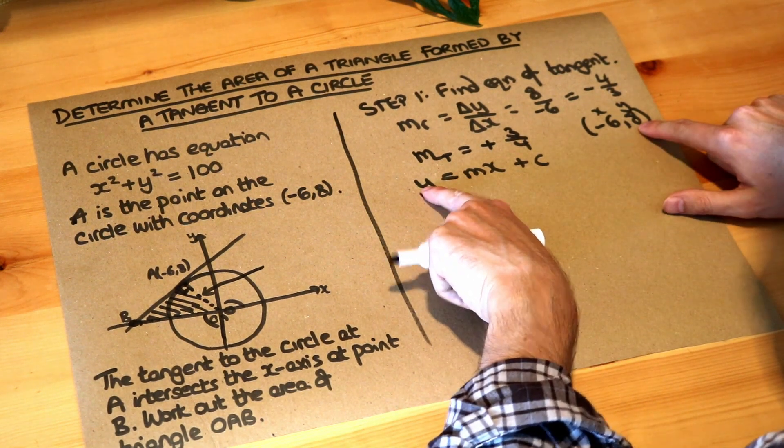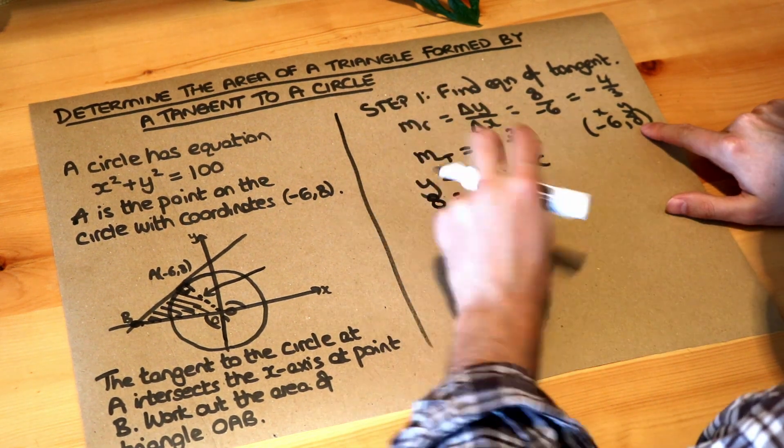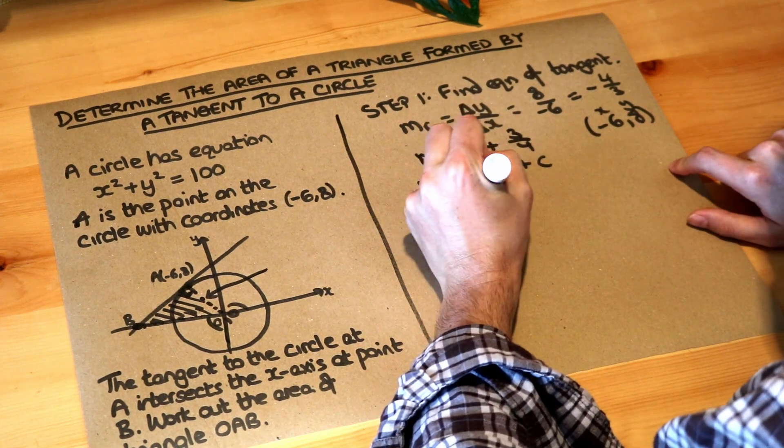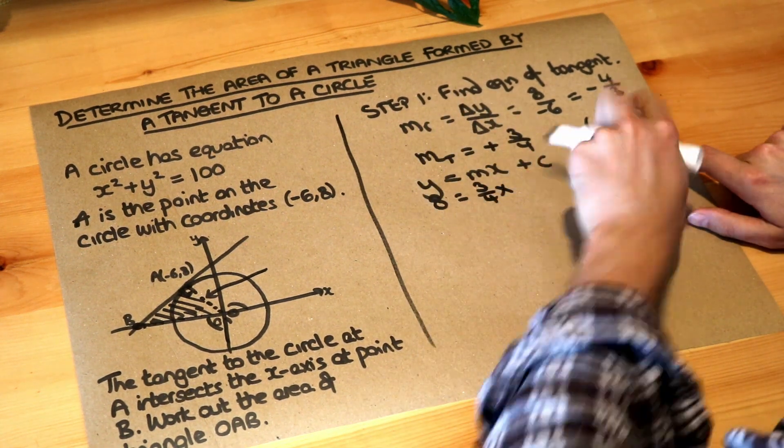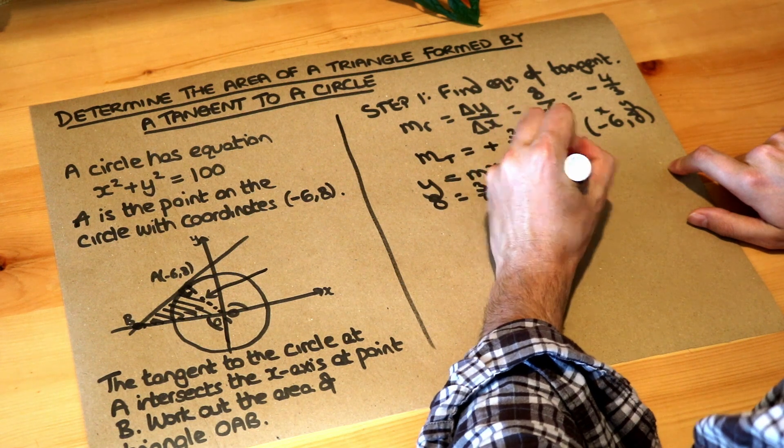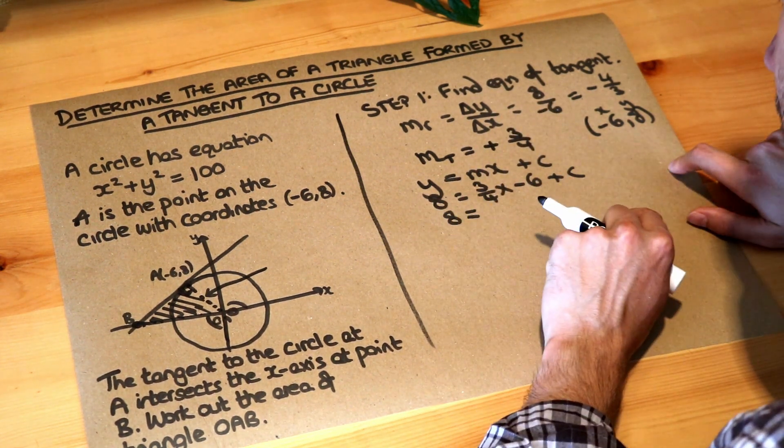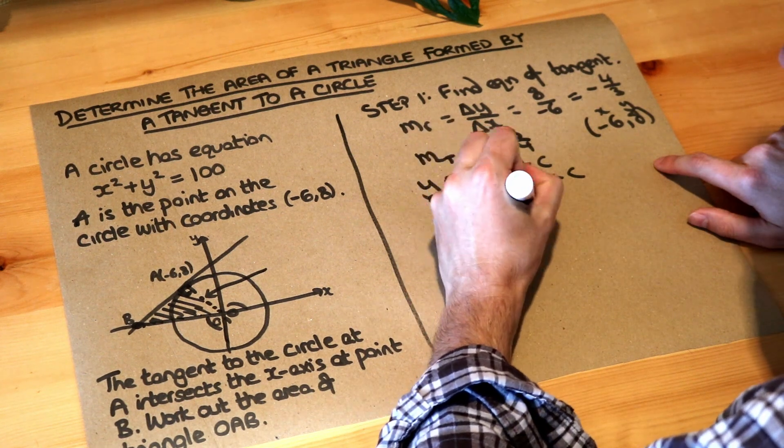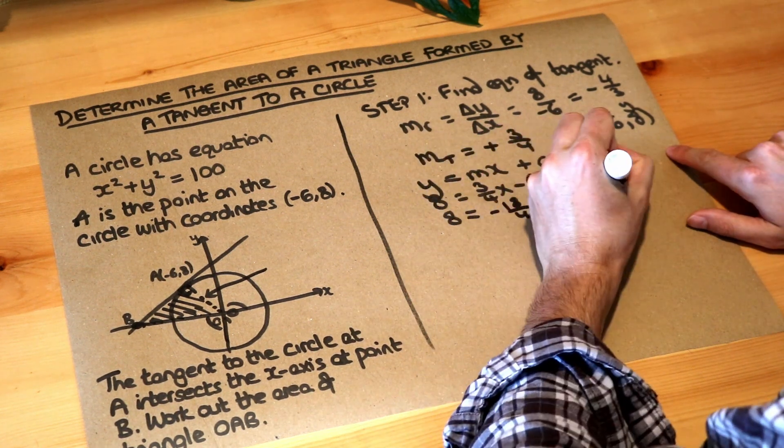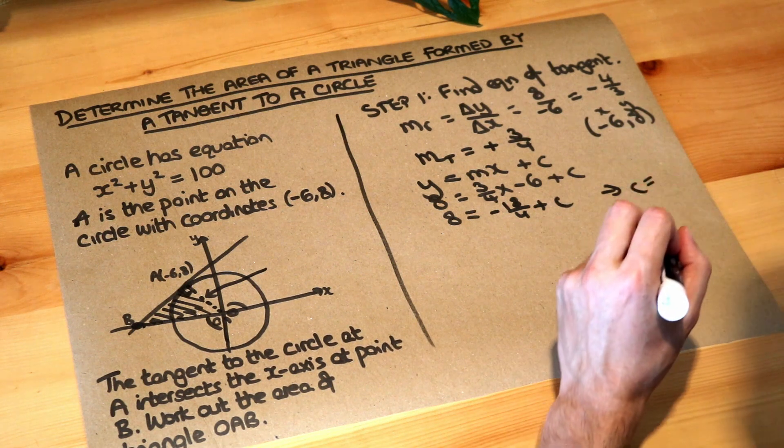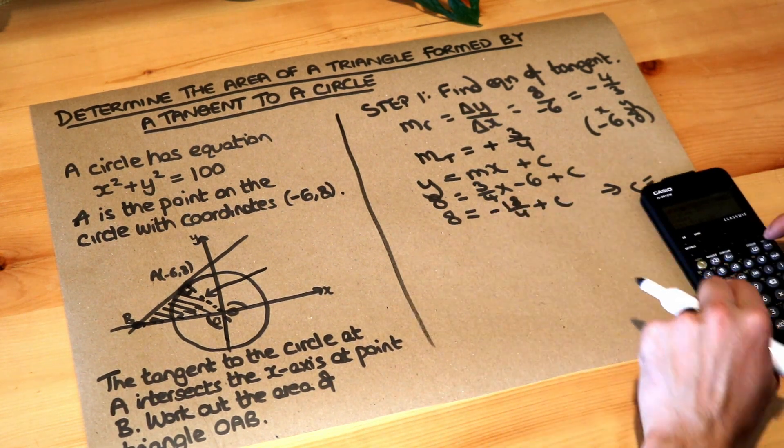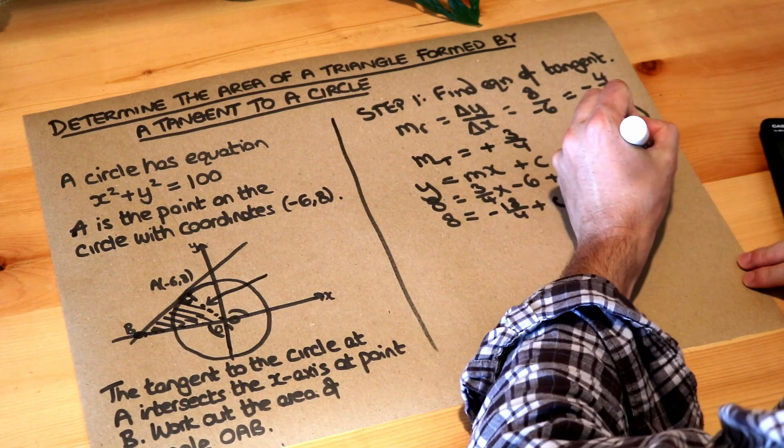So we've got y, which for this point is 8, equals m, which is three-quarters, times by the x-value, which is minus 6, plus c. And 8 is equal to three-quarters times minus 6, which is minus 18 over 4, plus c. That gives you c is equal to, I'm just going to do 8 plus 18 over 4, which is 25 over 2.